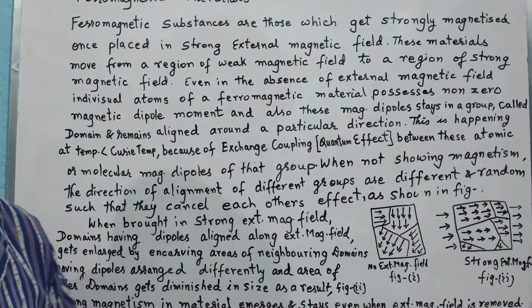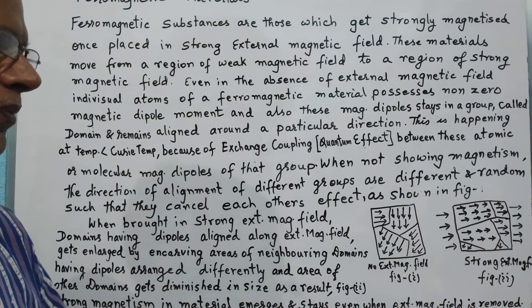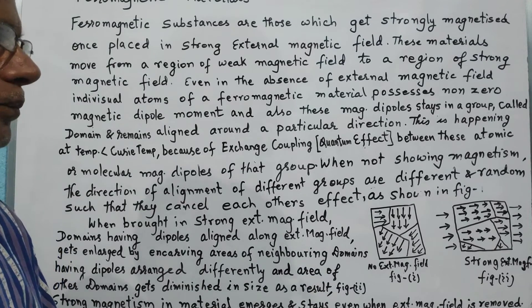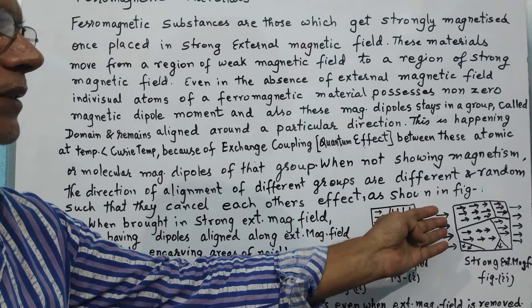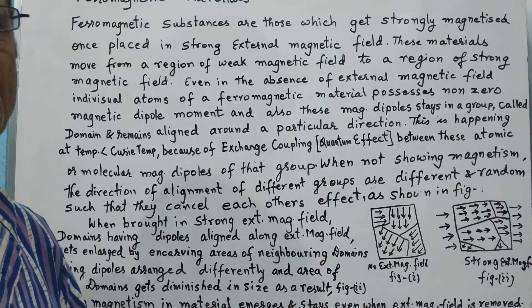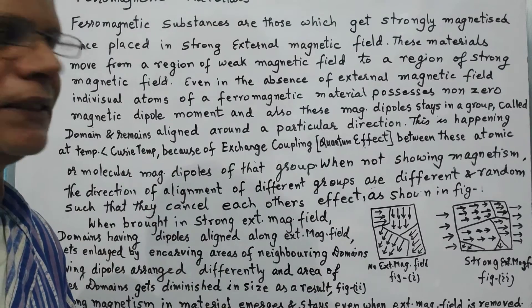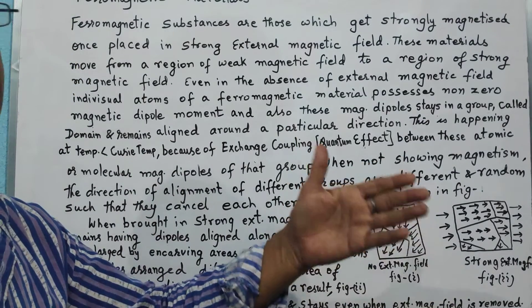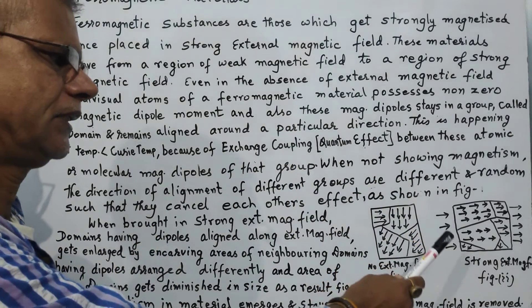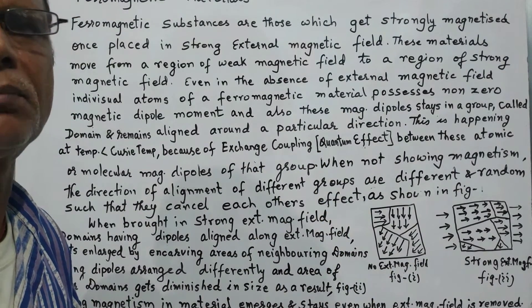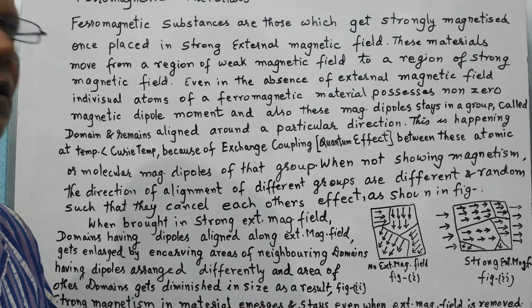So the stronger the external magnetic field, the greater the magnetism produced in the ferromagnetic material. Remarkably, the magnetic dipoles of these domains, once aligned along a particular direction, do not change their direction under the influence of a weak external magnetic field. This means that when the strong external magnetic field is removed, the ferromagnetic material retains strong magnetism and holds it for a very long time.